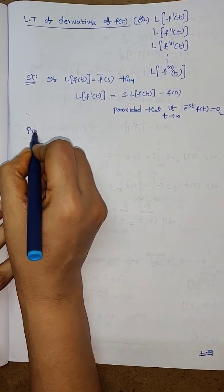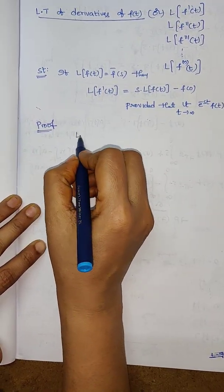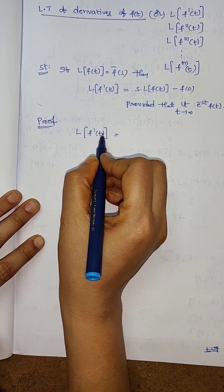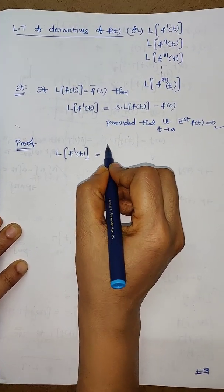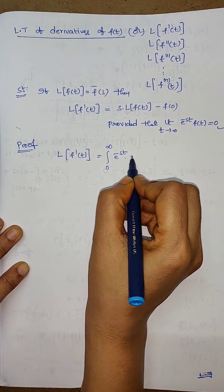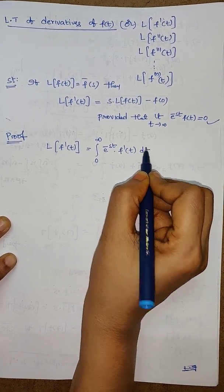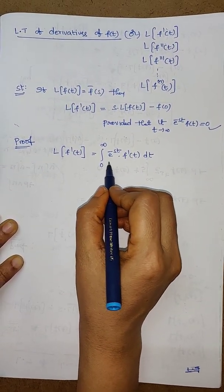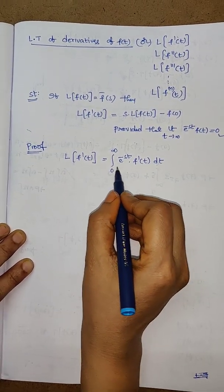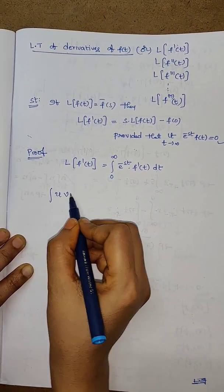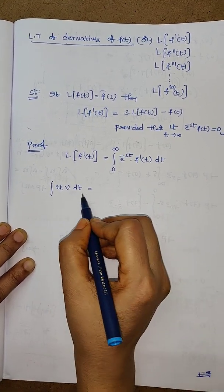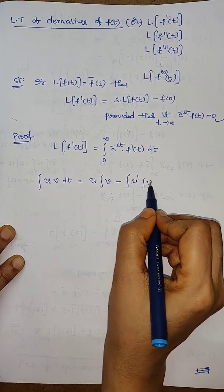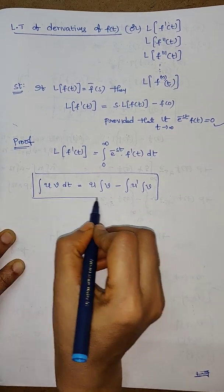Its proof is: from the basic definition, Laplace transform of f dash of t equals, applying the basic definition, the integral from 0 to infinity of e power minus st times f dash of t dt. Now to evaluate this integral, apply the integration by parts formula. The integration by parts formula is: if u and v are functions in terms of t, then integral of uv dt equals u times integral of v minus integral of (u dash times integral of v).